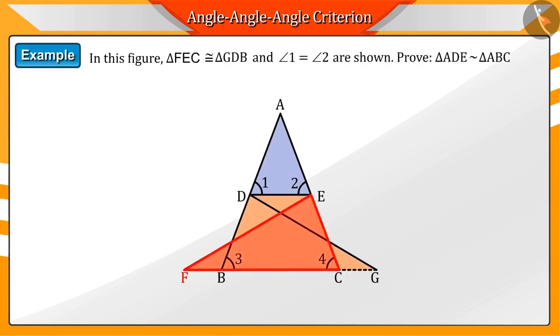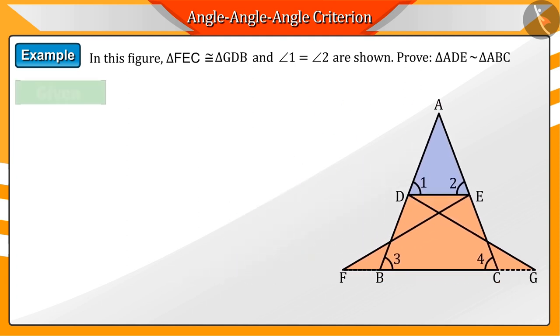In the given figure, triangles FEC and GDB are congruent and angles 1 and 2 are similar. Show that triangles ADE and ABC are similar triangles.